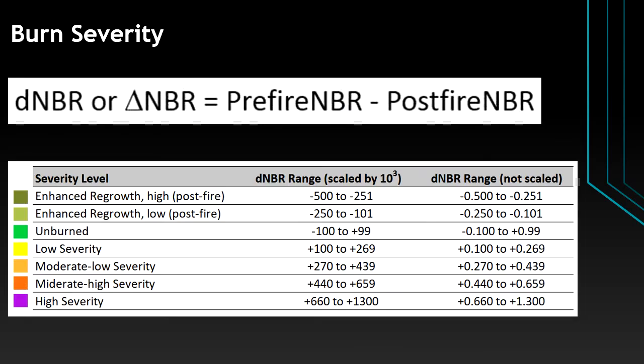We can associate NBR with burn severity. Burn severity is the difference of NBR: pre-fire NBR minus post-fire NBR, giving us the delta NBR (dNBR). If the dNBR ranges from 0.660 to +1.300, this is high severity, meaning the vegetation has suffered very significant loss.